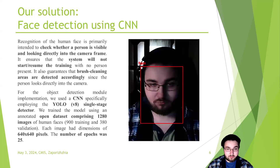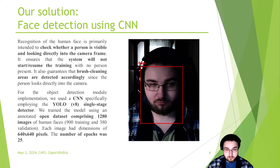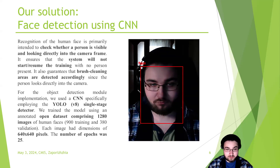As for the face detection module, face recognition serves as a primary function to verify if a person is visible and looking directly into the camera frame. It ensures that the system will not commence or resume training when no person is present in the frame. The main reason we added the face recognition module is to guarantee accurate detection of brush cleaning areas. For the object detection module implementation, we used a CNN — specifically a single-stage detector, YOLO. We trained the model using an annotated open dataset which consists of 1,280 images.